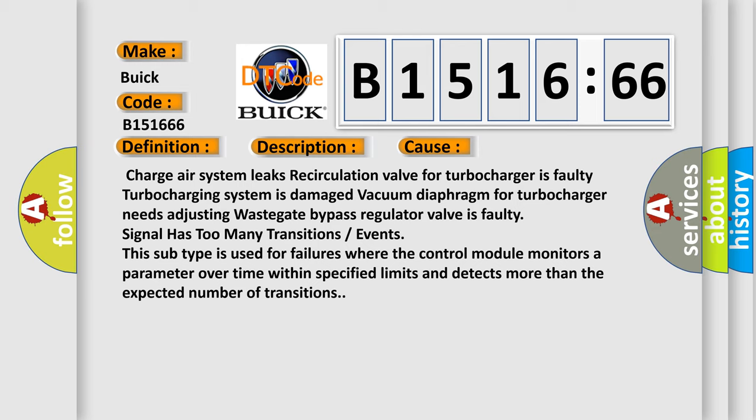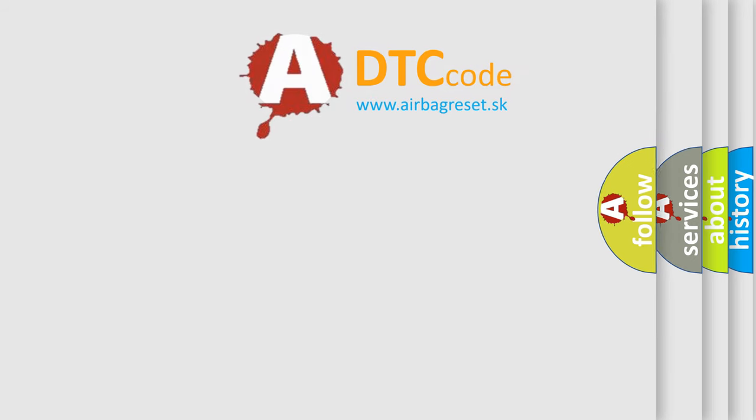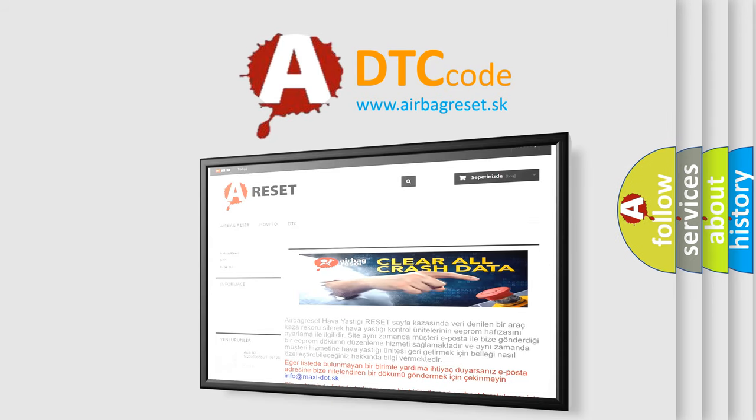This diagnostic error occurs most often in these cases: charge air system leaks, recirculation valve for turbocharger is faulty, turbocharging system is damaged, vacuum diaphragm for turbocharger needs adjusting, wastegate bypass regulator valve is faulty, signal has too many transitions or events. This subtype is used for failures where the control module monitors a parameter over time within specified limits and detects more than the expected number of transitions.